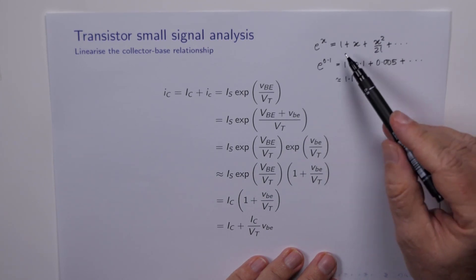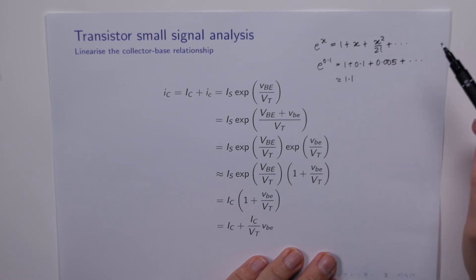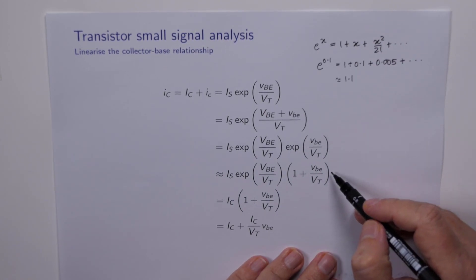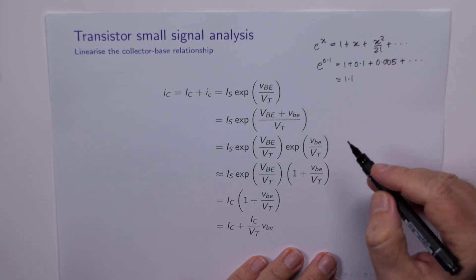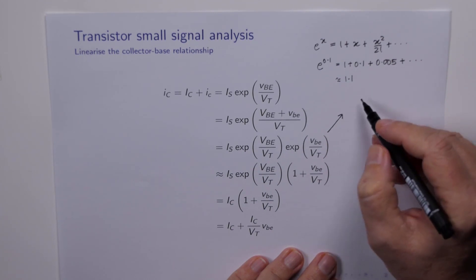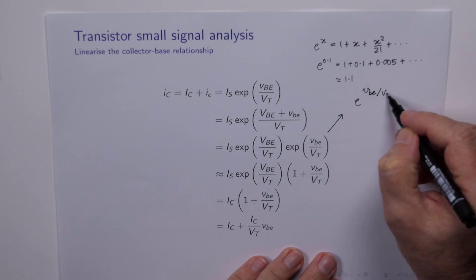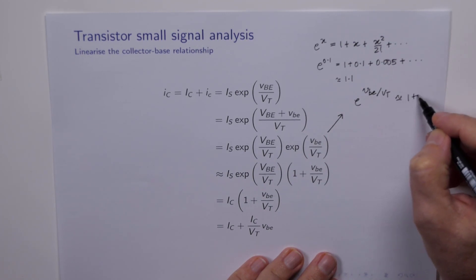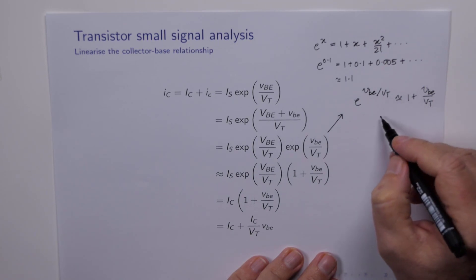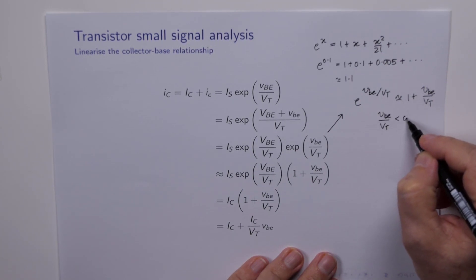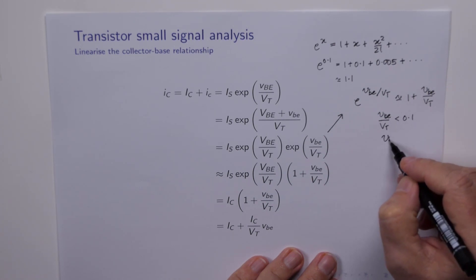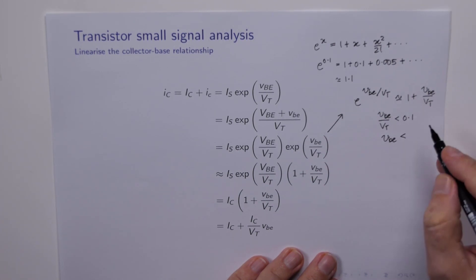And this is what we're going to assume in our linearization of this nonlinear equation. Provided our X, which is VBE over VT, is small enough, say in the order of 0.1, then this step here is quite legitimate. So what we're suggesting is that e to the VBE over VT is approximately 1 plus VBE over VT, provided VBE over VT is less than 0.1, or VBE is less than about 0.1 VT.